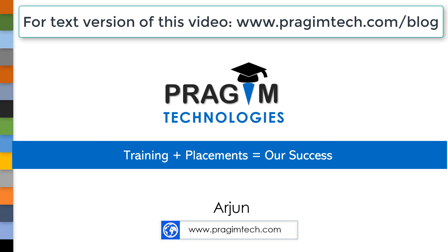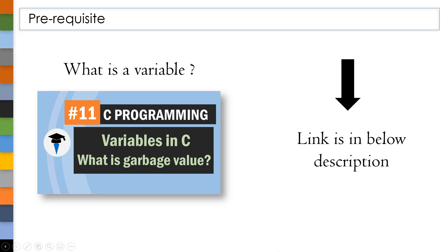This is part 12 of the C programming tutorial. In our previous session, we discussed what a variable is and how to declare, define, and initialize a variable. I have given the link to that video in the description below. If you didn't watch it, please watch it and come back to this video.